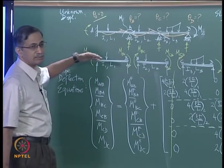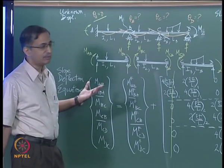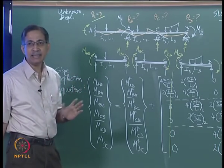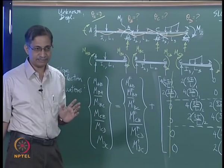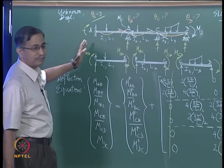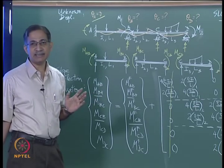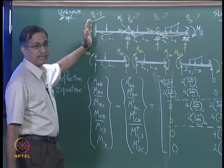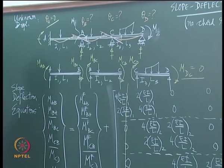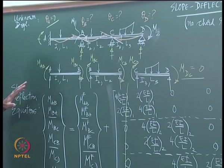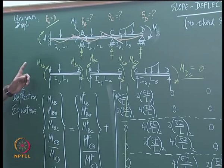None of those supports translate in this example, so there are no chord rotations. We have four rotations at the four joints: theta A, theta B, theta C, and theta D. In this example, end A is fixed, so theta A is 0. You may get a problem where theta A is not 0 but it is known — a known rotation slip. In terms of theta A, theta B, theta C, and theta D, you can write expressions called slope deflection equations for all the end moments.